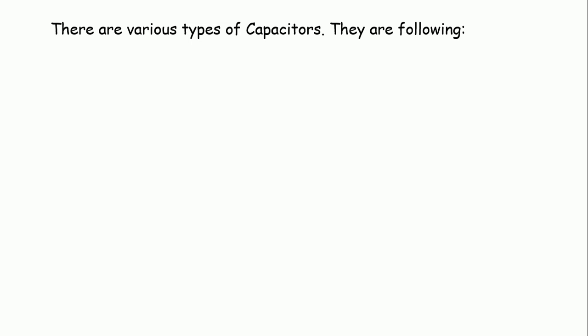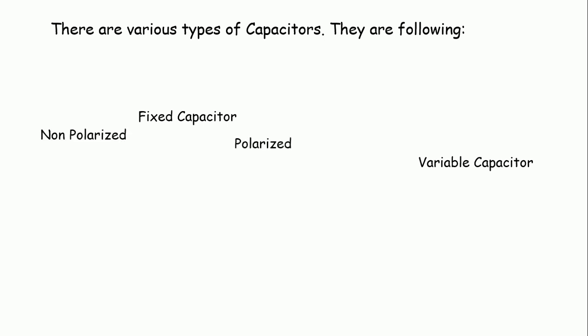Initially we can divide all capacitors into two categories: fixed capacitors and variable capacitors. As the name suggests, for a fixed capacitor the capacitance value is constant, and for a variable capacitor the capacitance value changes. Fixed capacitors are further divided into non-polarized and polarized. Non-polarized types include mica, ceramic, and film capacitors. Polarized types include electrolytic capacitors and super capacitors.